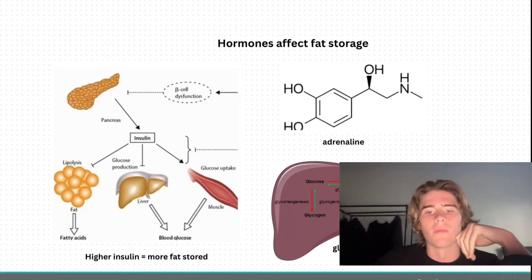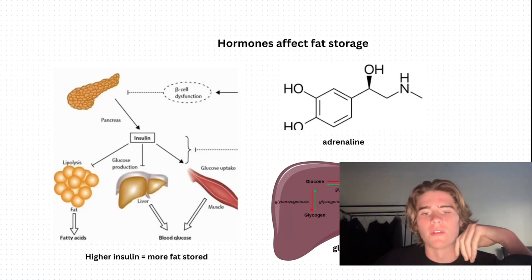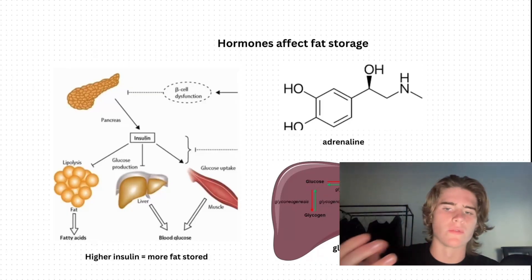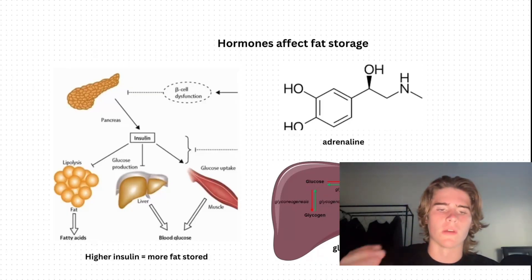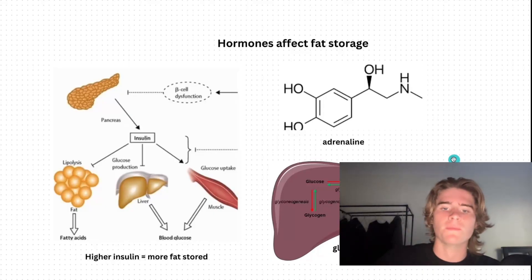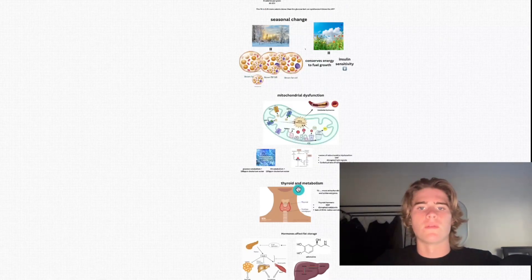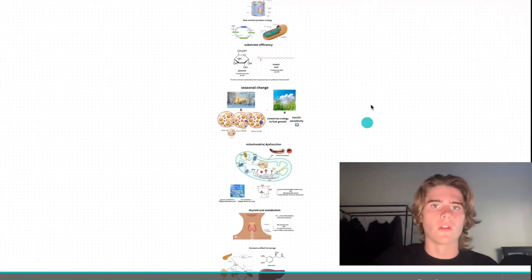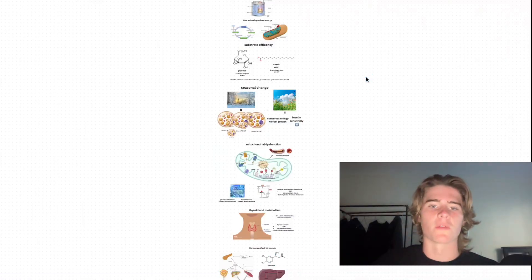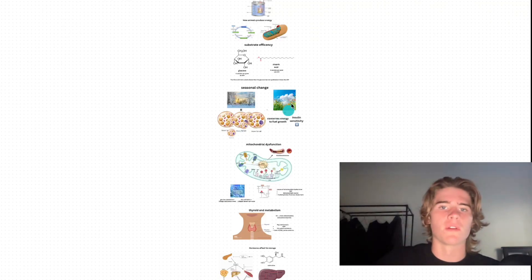And glucagon promotes gluconeogenesis, which is going to send glucose out into the bloodstream to be metabolized quicker in times of stress. Now we can see clearly that calories don't play a role at all in how we process food. We do not combust food — we process food chemically, as you can clearly see.